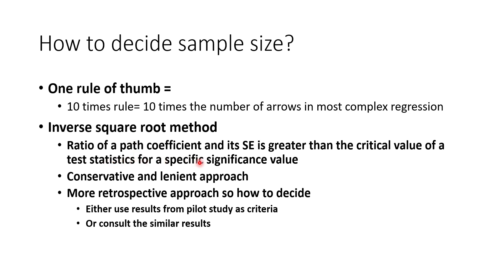In the inverse square root method, it considers the probability that the ratio of the path coefficient and its standard error will be greater than the critical value of a test statistic for a specific significance level. We need to choose that significance level to determine the minimum sample size required. This is a more conservative approach yielding larger sample sizes. The challenge is deciding what minimum path coefficient and significance level to use before having data — so we can use results from a pilot study or consult similar studies in the literature.